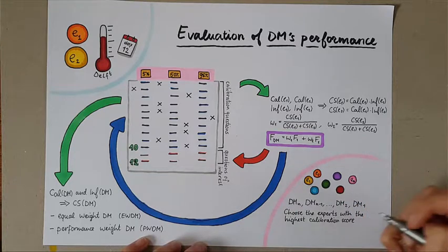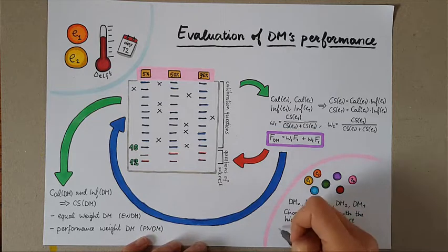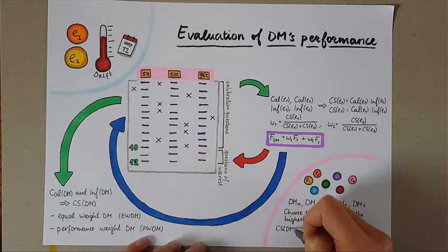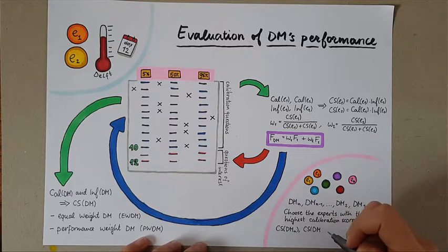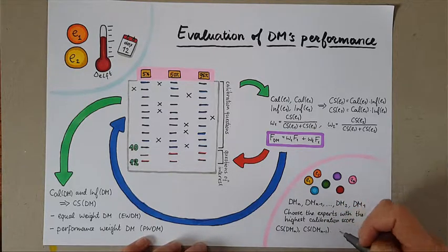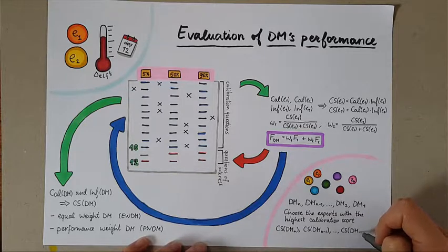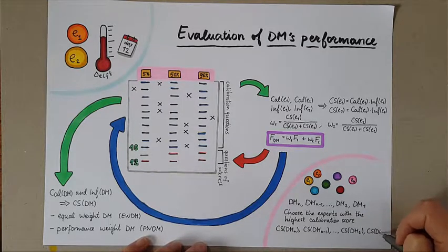Recall the alpha parameter in the formal definition of the weights in the combined score and decision-maker video at the beginning of this week. We can compute the combined score of the decision-maker resulting from choosing different number of experts in the linear pool. You can see that when n is 1, the decision-maker coincides with the best calibrated expert.